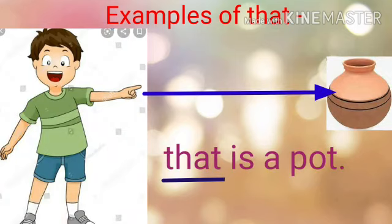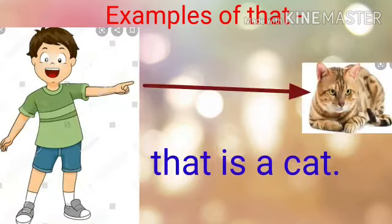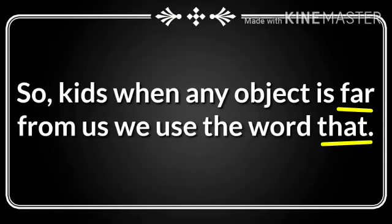Another example: 'That is a pot.' Here you can see the pot is far away from the boy, that's why we have used the word 'that' here. Next example: 'That is a cat.' Here you can see the cat is far away from the boy, so that's why we have used the word 'that' here. So kids, when any object is far from us we use the word 'that'.